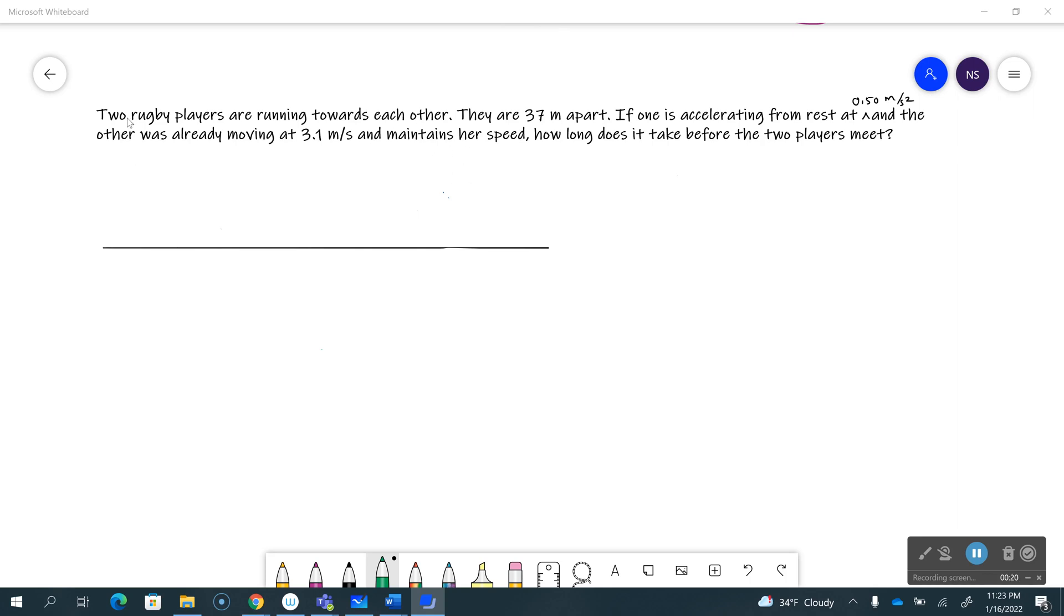So you can see here there are two rugby players, they are running towards each other, they are 37 meters apart. So let me draw this. I'll call one of the players player one and the other one I'll say is player two, and they are 37 meters apart.